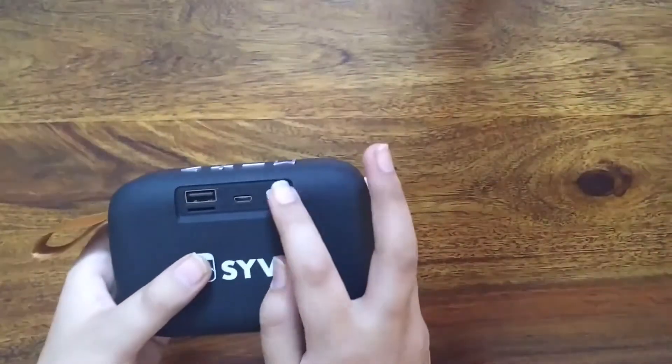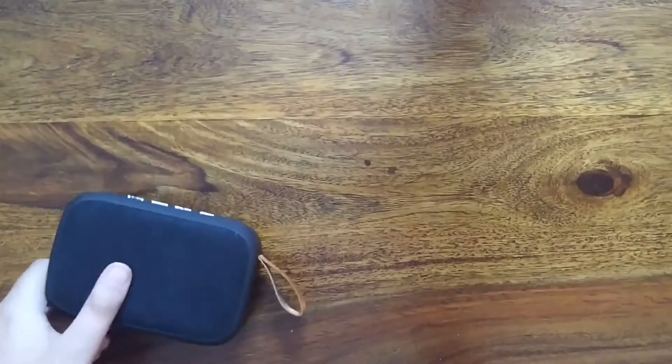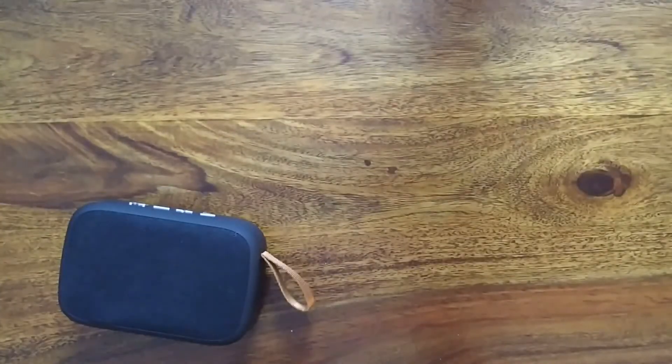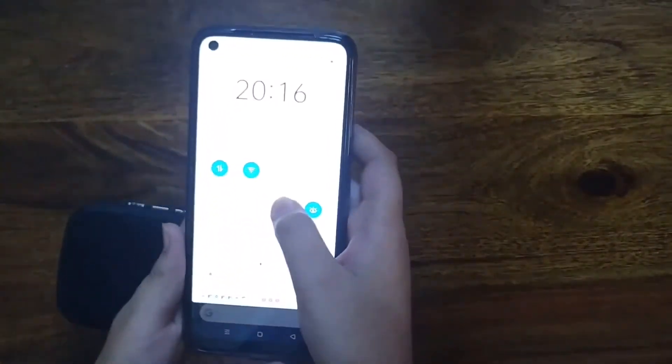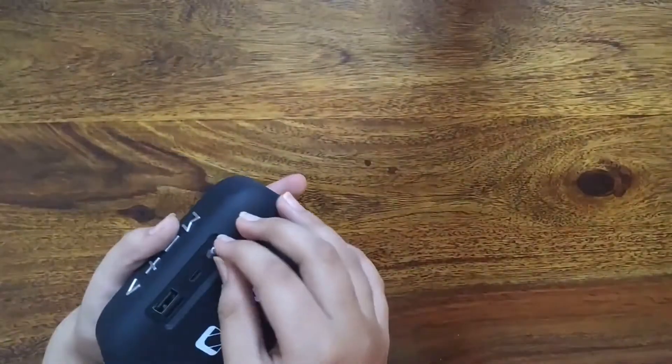And here is the on/off switch. Now let's pair it. To pair it is easy, just get your phone. Open its Bluetooth settings. Here I have started Bluetooth. Now I have started it from the on/off switch.